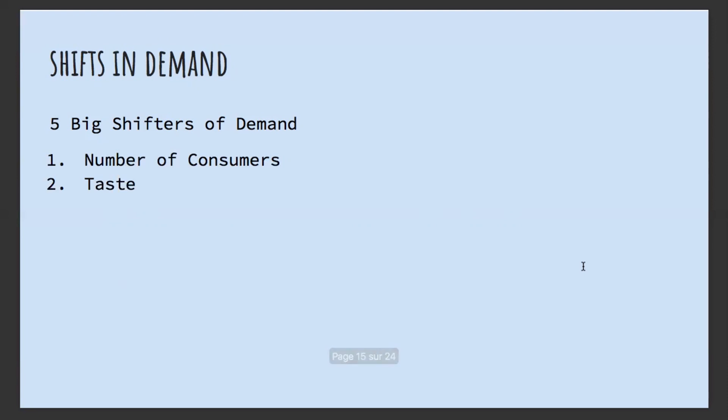The second shifter is taste, or the preferences of consumers. If all of a sudden everybody is loving Coke, the demand will increase and shift to the right. But if there is a scandal or a new study says that Coke is very bad for your health and consumers stop buying it, the demand will decrease and shift to the left.